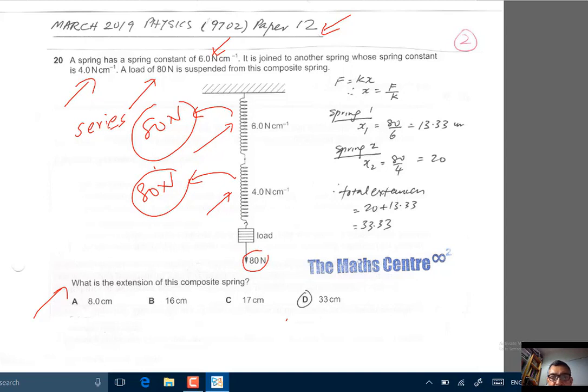Let's work out the extension that you get in this spring first. I'm calling it spring 1. For spring 1, when you apply a force of 6 Newton, there's an extension of 1 cm. Therefore, when you apply 80 Newton, you will get 80 over 6, 13.33 cm. That's the extension for spring 1.